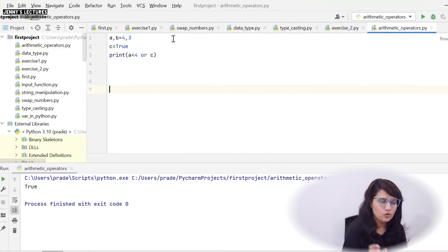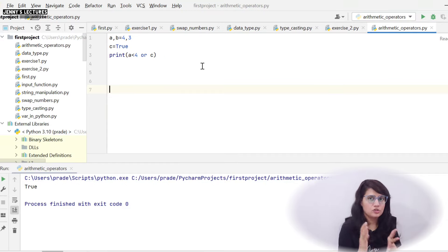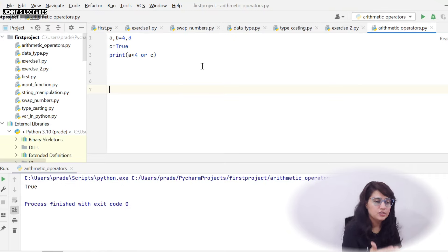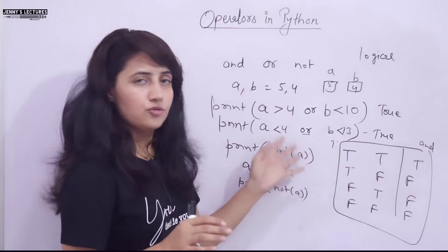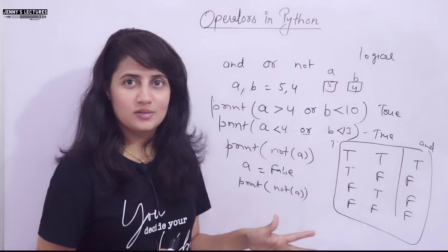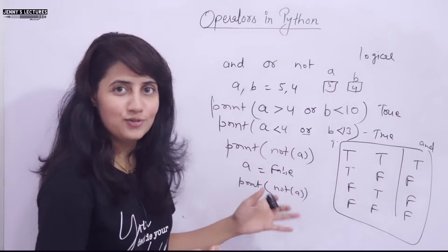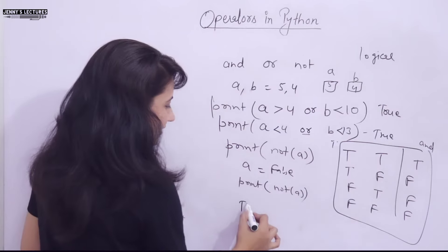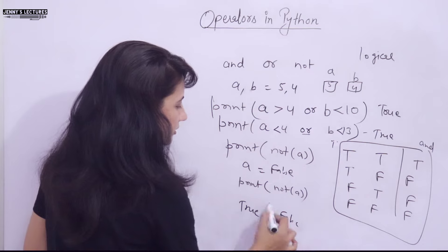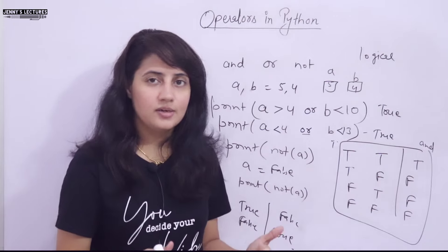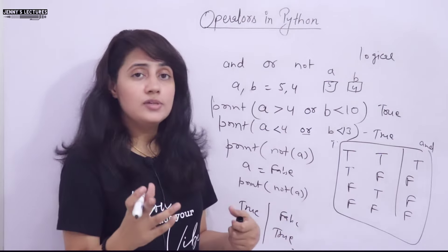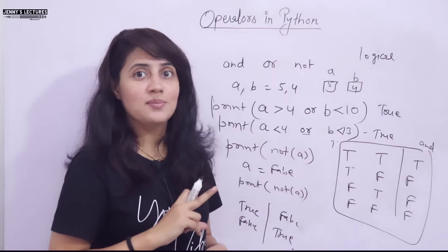I hope you understood the working of logical AND, logical OR, and logical NOT operators, along with their truth tables. For NOT: if input is True it gives False, if input is False it gives True — it negates the result. You can try different conditions on your own. In the next video we will see bitwise operators. Till then, bye bye, take care.